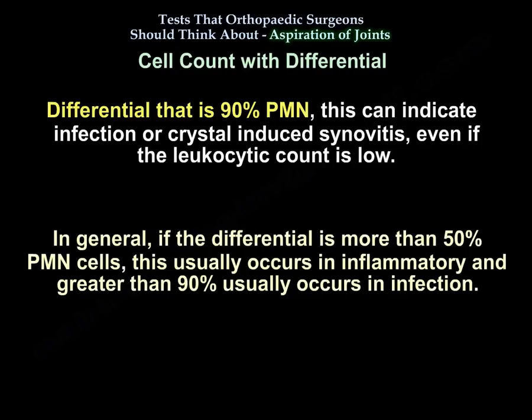The differential of 90 percent PMN can indicate infection or crystal-induced synovitis even if the leukocyte count is low. In general, if the differential is more than 50 percent PMN cells, that occurs usually in inflammatory conditions, and greater than 90 percent PMN occurs usually in infection.